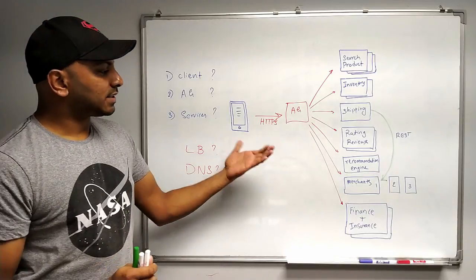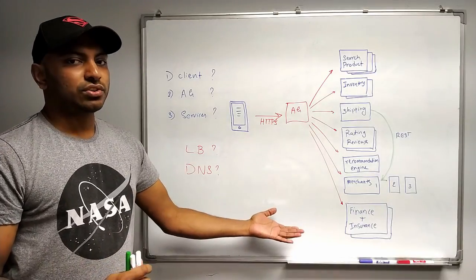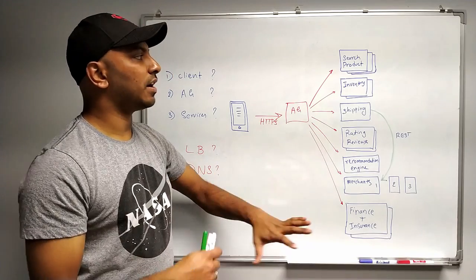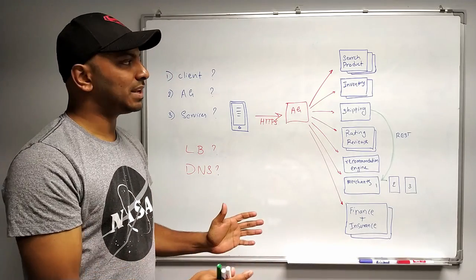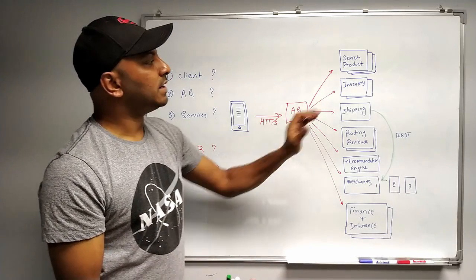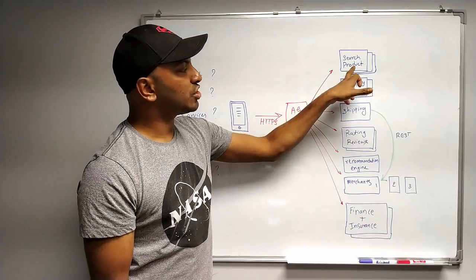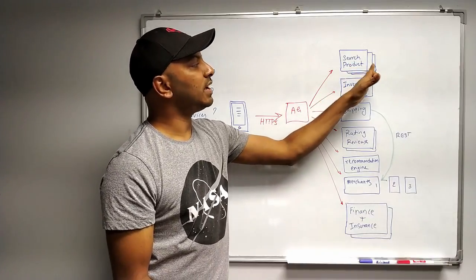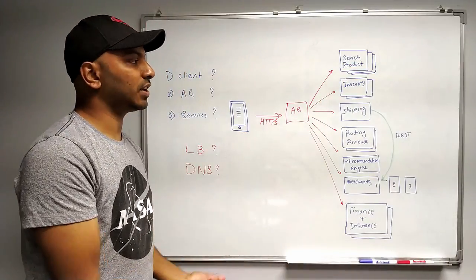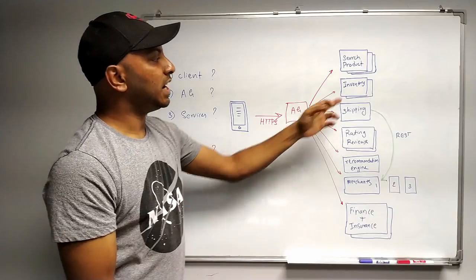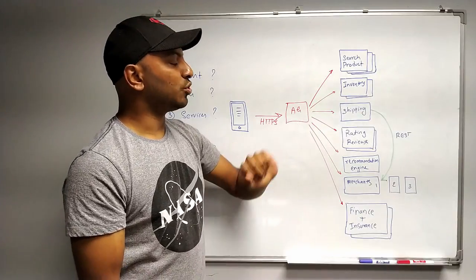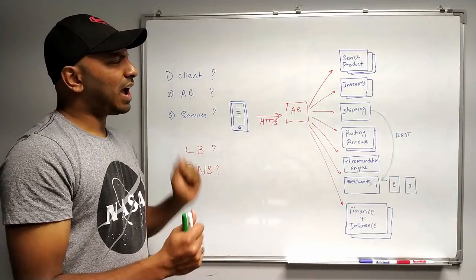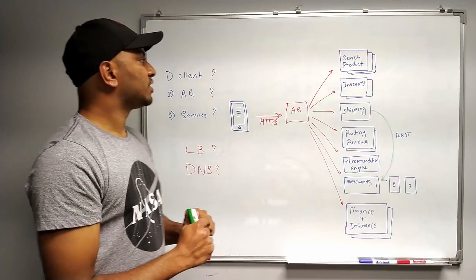So before that, let's take this configuration of e-commerce microservices. These are the microservices for our e-commerce application. Say now the search or product microservices is running three instances of the codebase, and inventory is running in two instances. Now, I have a couple of questions to ask you.